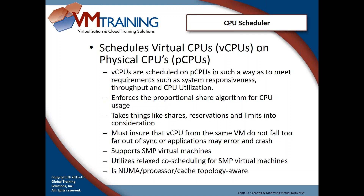By default, reservations are not set and limits are not set. Shares are set to a normal value — it's a democratic process where you're fighting for CPUs among all other VMs. We can increase reservations, lower limits, increase or lower shares to give priority to certain VMs. Think of shares like quality of service: if you have a limited amount of resources and not everything can get through, you want to prioritize what does get through.